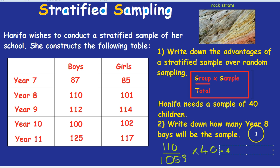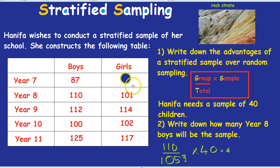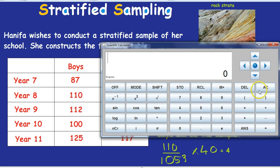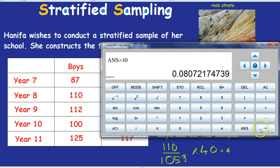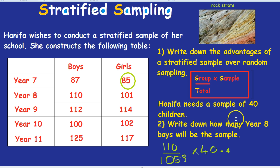Let's do one more group — how about year 7 girls? For year 7 girls, the group size is 85. The total is still 1053. So we do 85 divided by 1053, times by the sample of 40, because Hannifer is doing a sample of 40. This time we get 3.22, so rounding to a whole number, that's 3. There will be 3 year 7 girls in this sample.